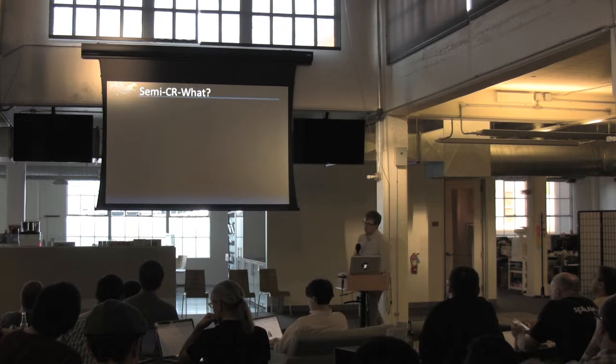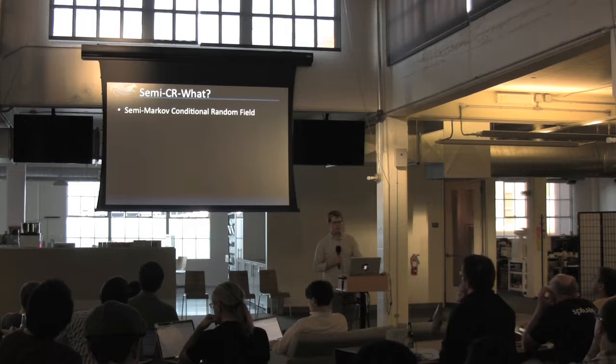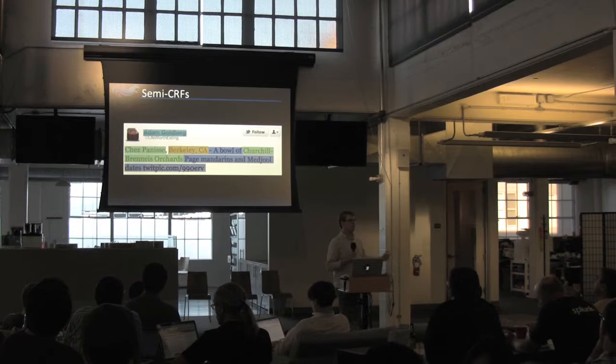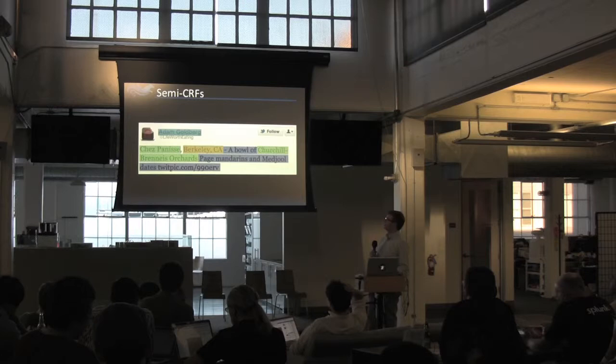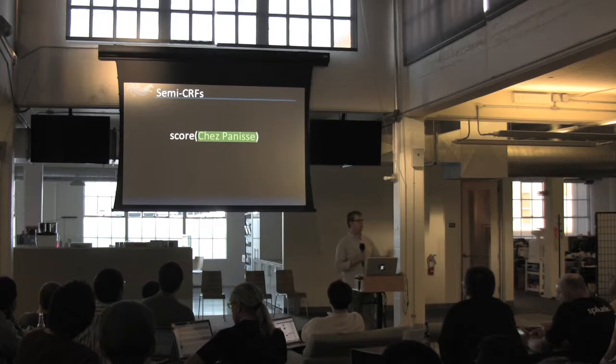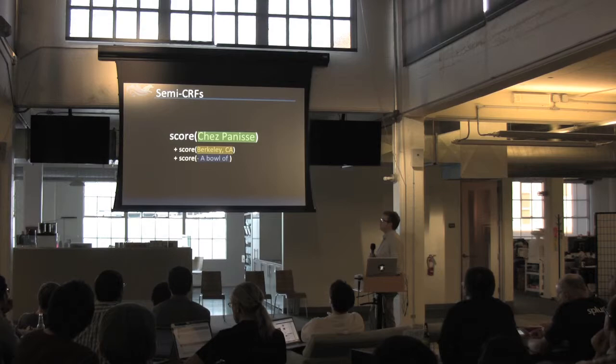Let's talk about semi-CRFs. It stands for Semi Markov Conditional Random Field — don't worry too much about the name. The basic idea is that if you have a string of text, you want to break it up into a bunch of segments. Some of the segments have meanings like people, places, and things, but some of them are just 'other' or 'outside.' The semi-CRF picks the best sequence that maximizes the score of each individual segment — the score of Chez Panisse plus Berkeley plus others, and so on.